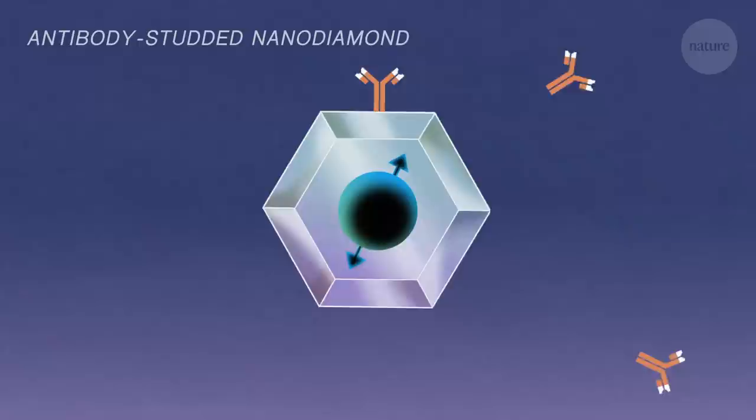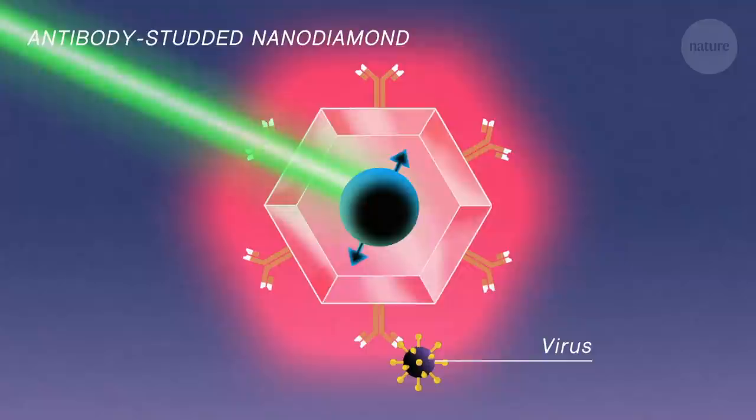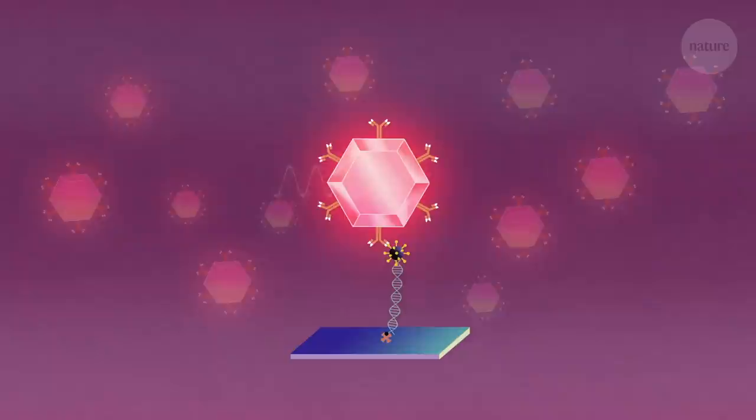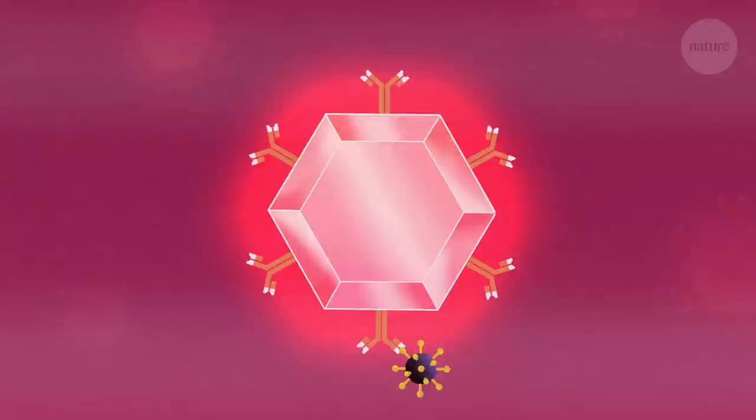Scientists can use this for all sorts of applications, like diagnosing disease. Tiny diamonds can be attached to a particular virus molecule. The researchers use microwaves to brighten and dim the light the diamonds give off. This helps the diamonds stand out from the crowd of light pollution in a biological sample. Spotting a diamond means that the virus is present and the disease is detected.